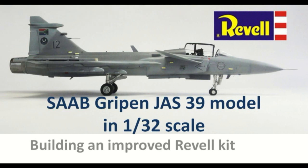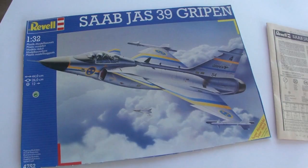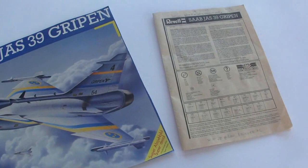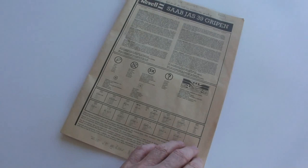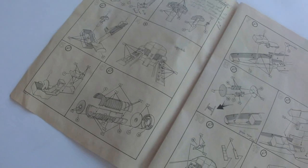The Saab JAS 39 Gripen in 32nd scale. Improving the old Revell kit in 32 scale. The kit brand Revell Germany released a plastic model kit of the Saab JAS 39 Gripen some 30 years ago. It is until now the only Gripen in this modeling scale but has large inaccuracies. This modeling video will show how the kit can be made into a far better model.